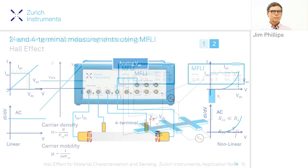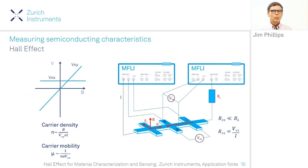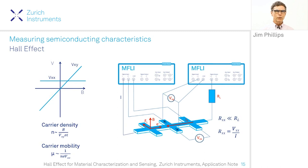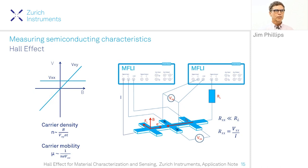We can also make a Hall measurement, measuring the voltage transverse to both the magnetic field and the current, which tells us about carrier mobility and density. If we wish to measure the longitudinal resistance and Hall resistance simultaneously, we can couple two lock-in amplifiers and make them work as one.